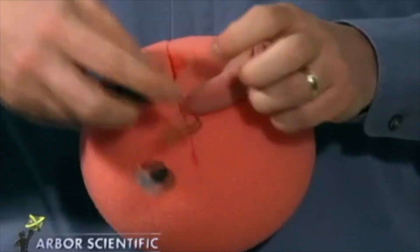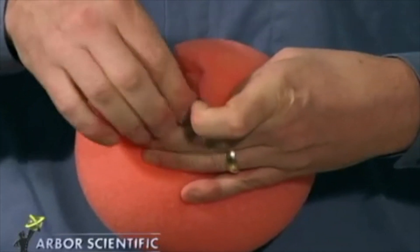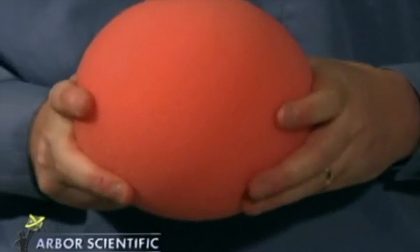Just snap the battery into place and push the holder into the slit in the ball, followed by the buzzer. Start tossing it around the room.